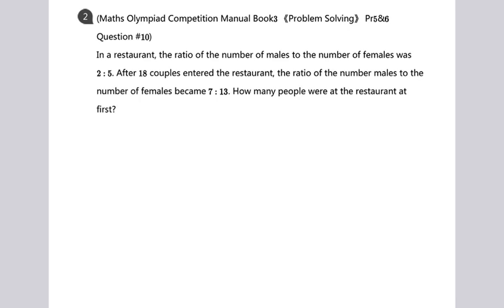In a restaurant, the ratio of the number of males to the number of females was 2 to 5. After 18 couples entered the restaurant, the ratio of the number of males to the number of females became 7 to 13. How many people were at the restaurant at first?